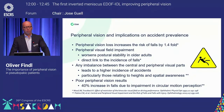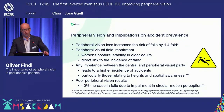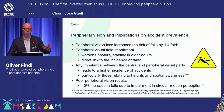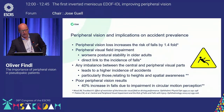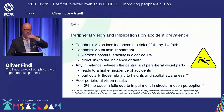The implications of peripheral vision on accidents: peripheral vision loss — including in patients with glaucoma — increases the risk of falls by 1.4-fold. It also worsens posture stability especially in older patients, and there are direct links to the incidence of falls. An imbalance between central and peripheral visual processing also leads to a high incidence of accidents, especially in situations requiring height assessment or spatial awareness.